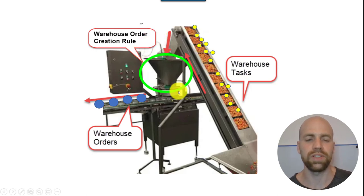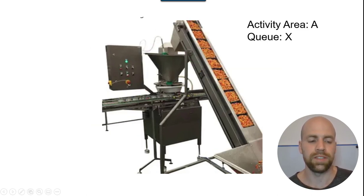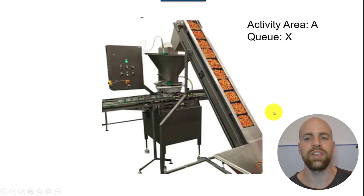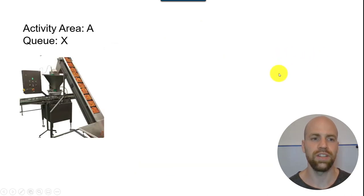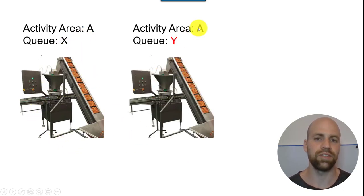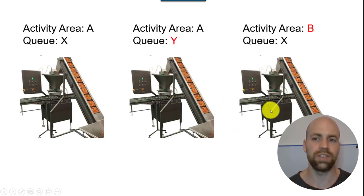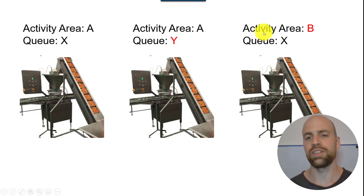Just imagine we have one warehouse order creation rule with an input and an output. As part of the preparation, it is important to understand that we have such a system for every combination of activity area and queue. That means it is never possible to have warehouse tasks from different activity areas and different queues in the same warehouse order. Imagine one filling line for activity area A and queue X, another for the same activity area but a different queue, and another for a different activity area but the same queue — we never mix those up.